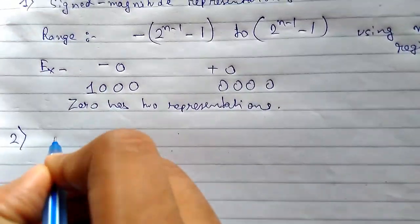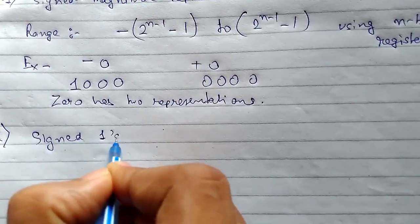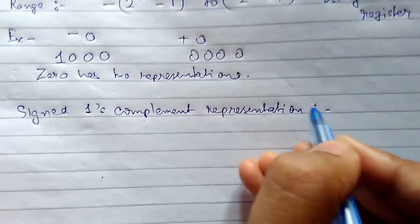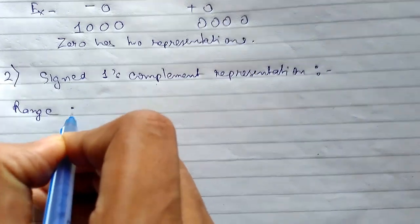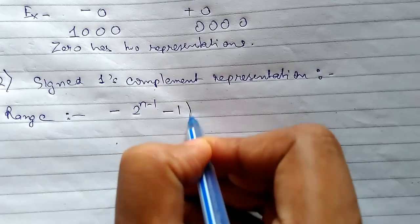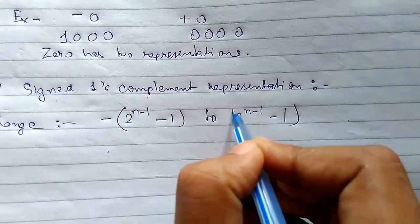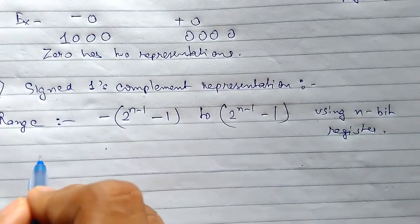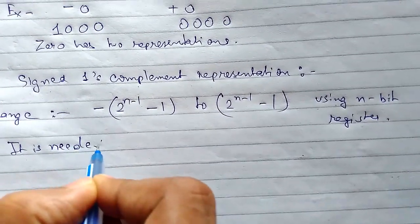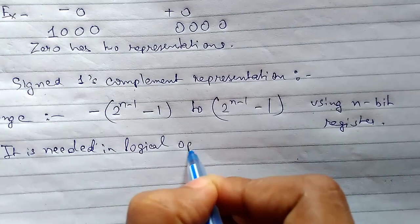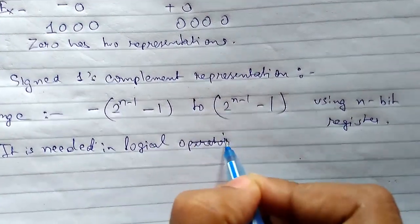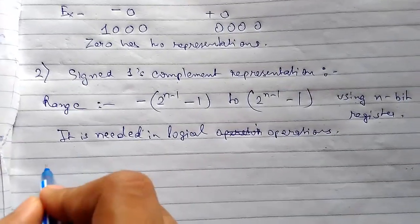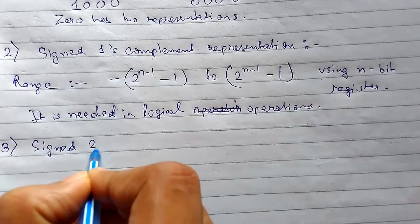Number two is signed one's complement representation. The range is from minus 2 to the power n minus 1, minus 1, to 2 to the power n minus 1, minus 1, using an n-bit register. It is needed in logical operations.